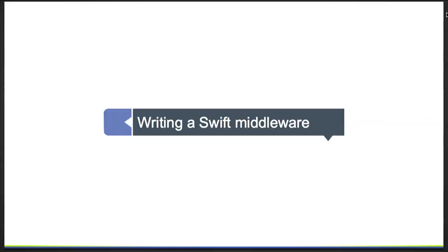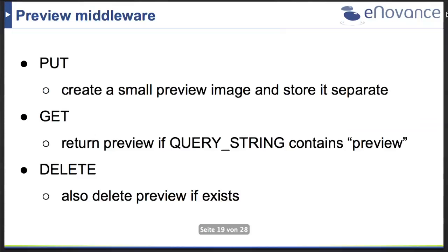Now we're here to write a Swift middleware, not a basic WSGI application. For this talk, I've designed a small preview middleware — useful for an image sharing service. For every PUT of an image sent to the Swift proxy, we create a small preview image and store it separately from the original object. For a GET with a 'preview' query string, we return only the preview object. And if the original object is deleted, the preview is also deleted.